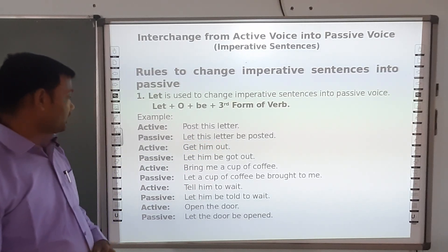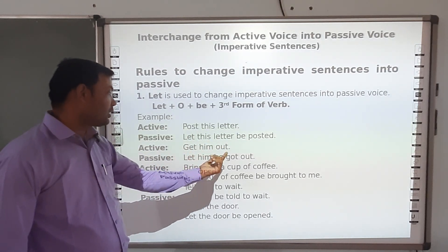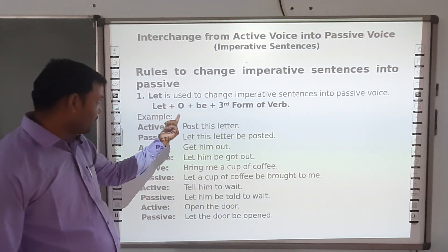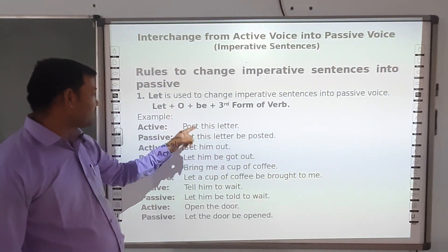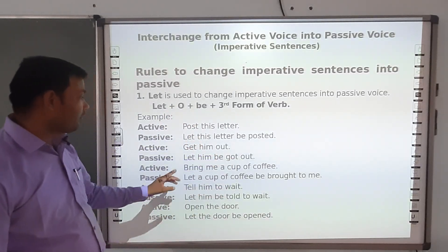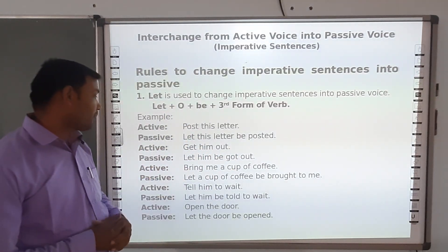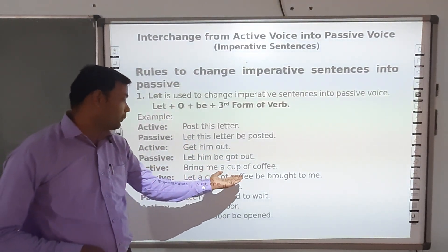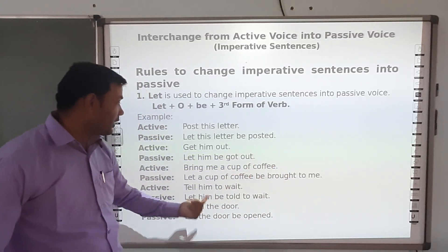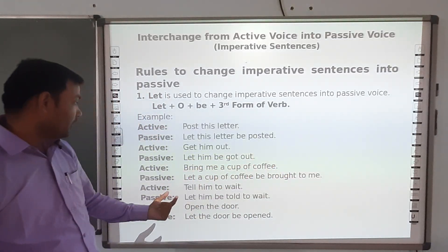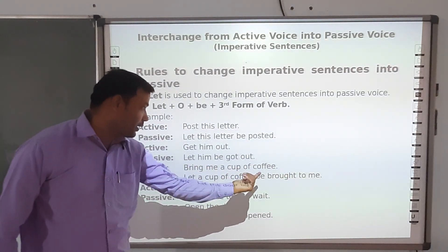Next example: 'Get him out' becomes 'Let him be got out'. Here the object is 'him', 'be' is added as per the structure, and 'got' is the third form of 'get'. Another example: 'Bring me a cup of coffee' — the object is 'a cup of coffee' and 'me' changes to 'to me'.